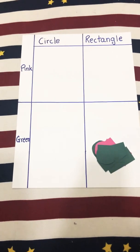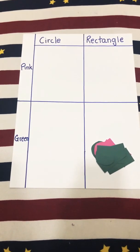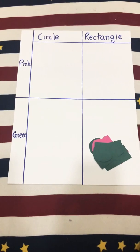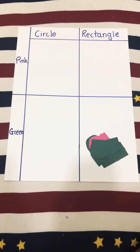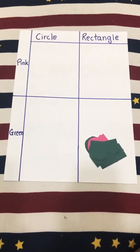Hello students, you have learned how to sort and handle data using tally marks and block graphs. Now you're going to learn another way to sort and handle data, which is known as the Carroll diagram.